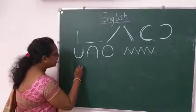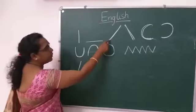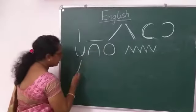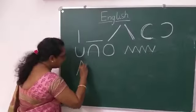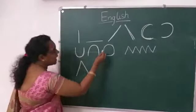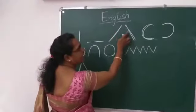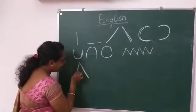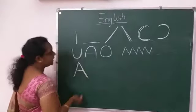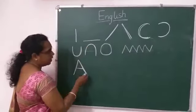A — upward line. Can you see here? Upward line. Downward line. Can you see here? Downward line. And sleeping line. Sleeping line.